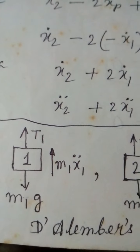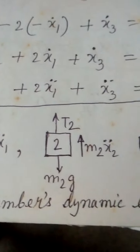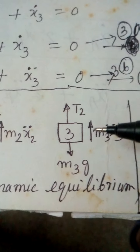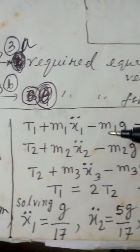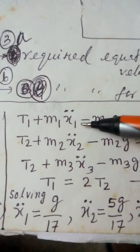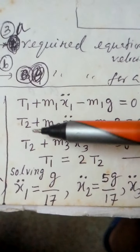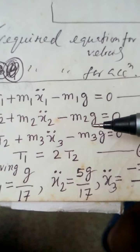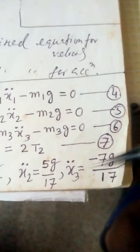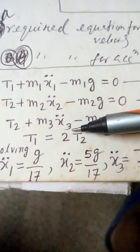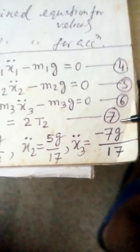Writing the dynamic equilibrium equations: For mass 1 — T1 plus M1*x1_double_dot minus M1*G equals zero (Equation 4). For mass 2 — T2 plus M2*x2_double_dot minus M2*G equals zero (Equation 5). For mass 3 — T2 plus M3*x3_double_dot minus M3*G equals zero (Equation 6). And T1 equals 2*T2 (Equation 7).